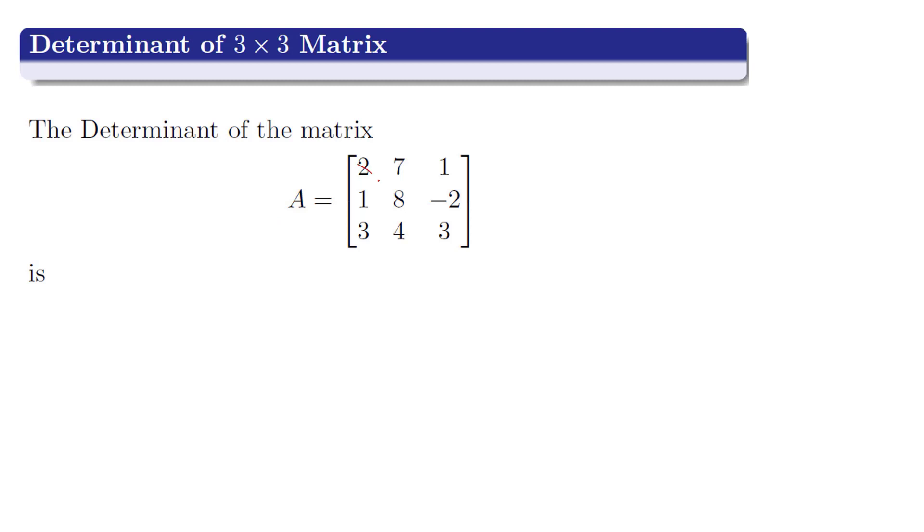First we have to multiply the element which is on the main diagonal which is 48. Now multiply the element which is on the super diagonal with the element which is below the sub diagonal which is minus 42.